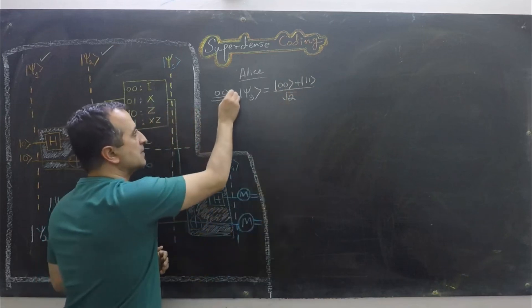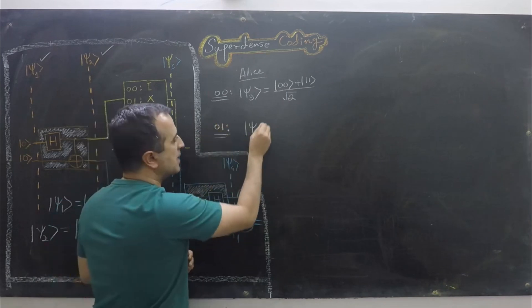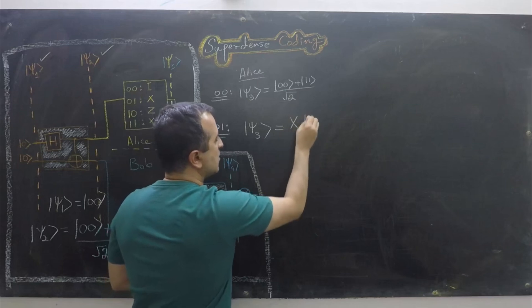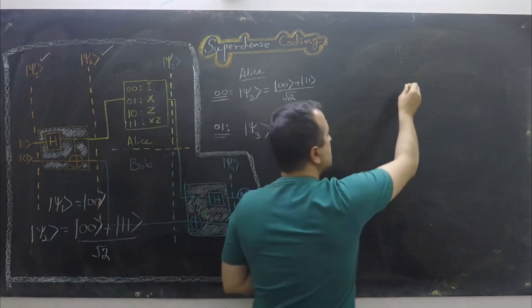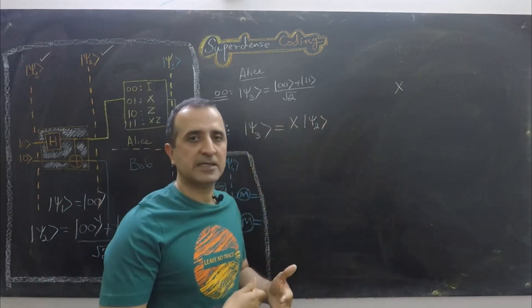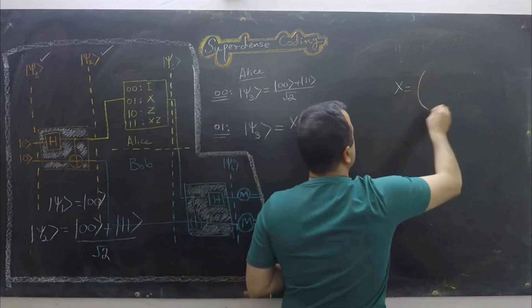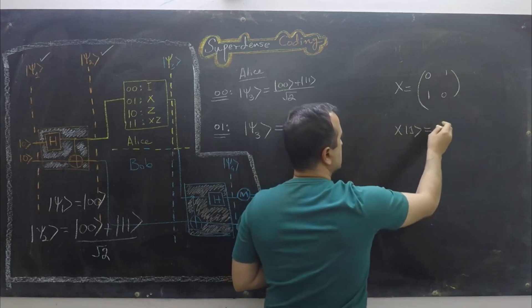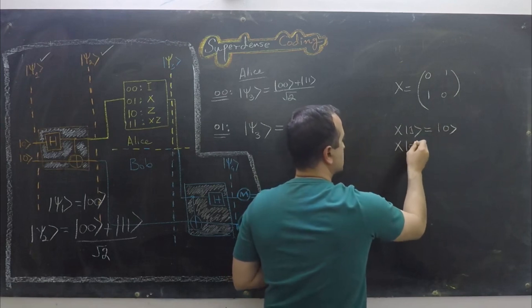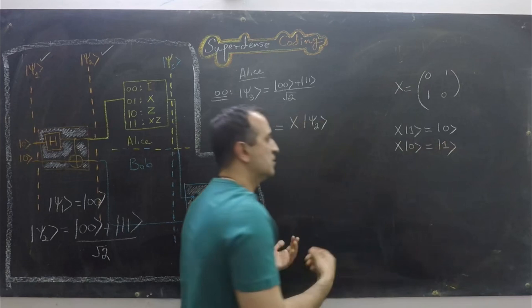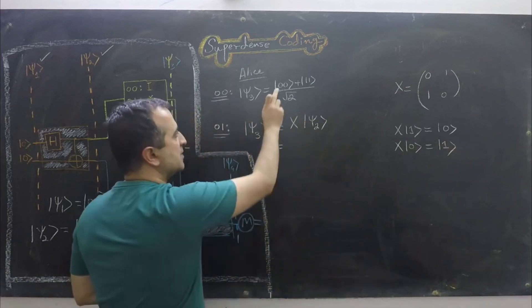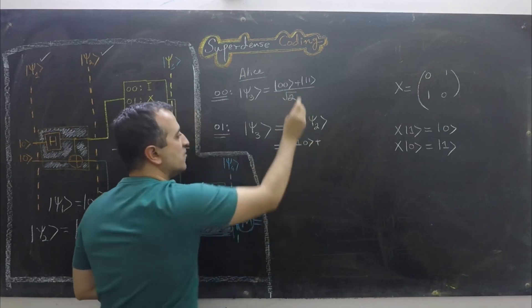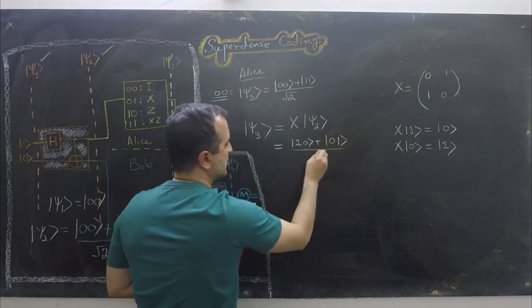If Alice wishes to send 01, then Alice will apply the Pauli-X gate on her portion of the Bell state. The Pauli-X gate, also known as the NOT gate, changes |0⟩ to |1⟩ and |1⟩ to |0⟩, and in matrix form is written as [[0,1],[1,0]]. Applying the Pauli-X gate on ket psi 2, the first qubit flips from |0⟩ to |1⟩ and from |1⟩ to |0⟩, giving ket psi 3 = (|10⟩ + |01⟩) / √2.